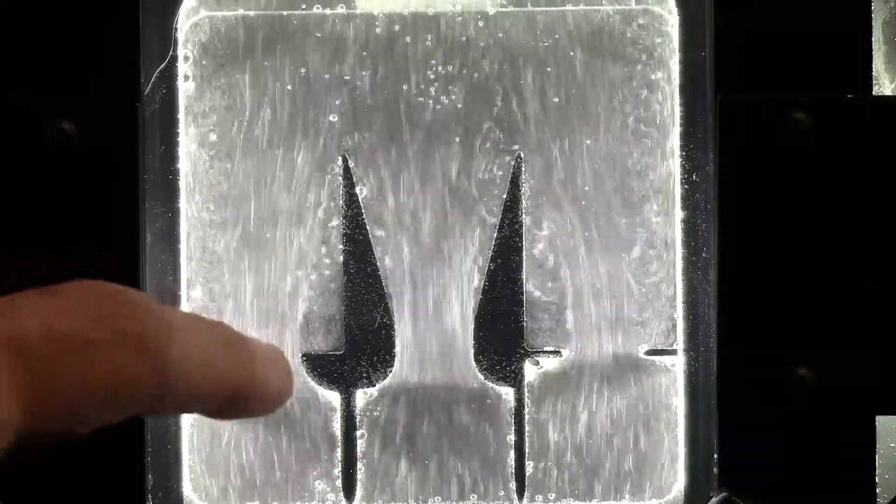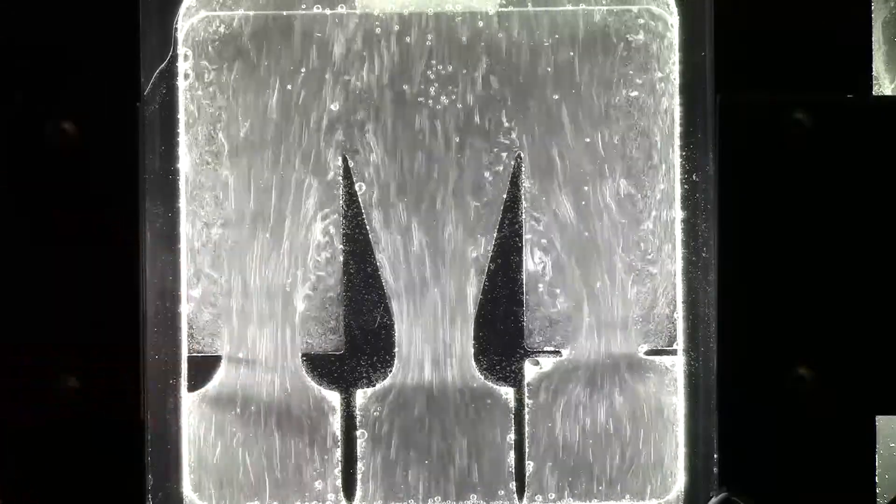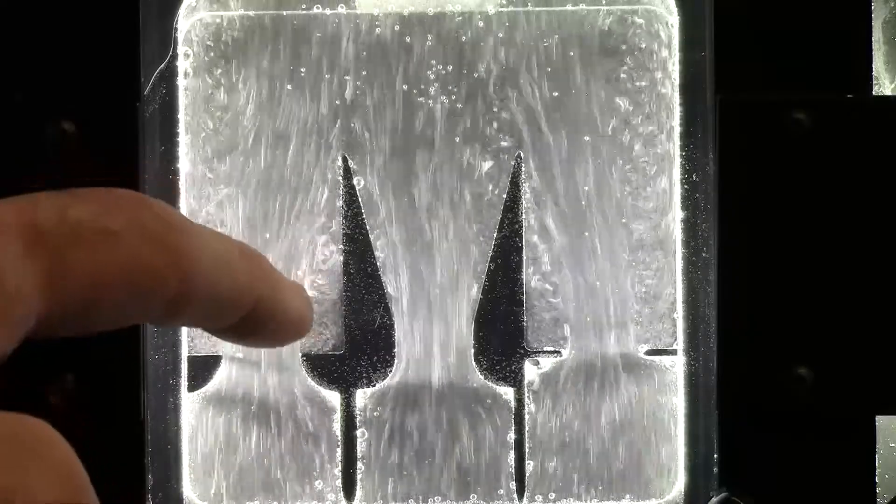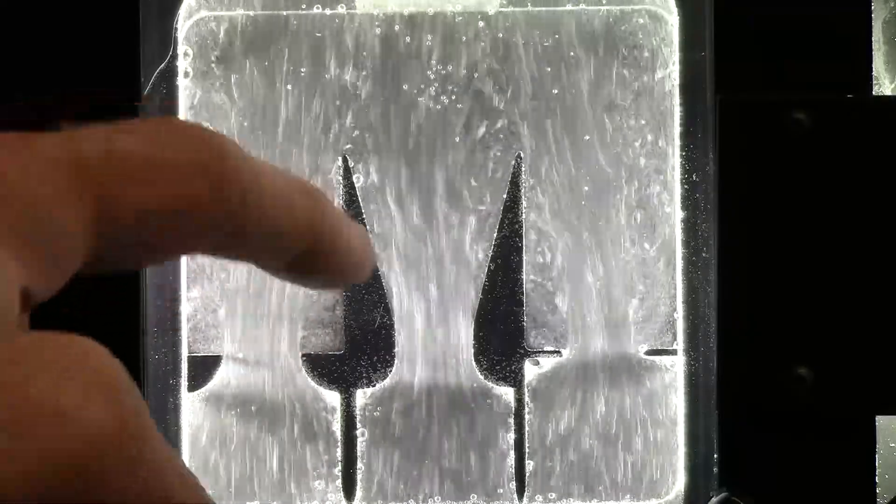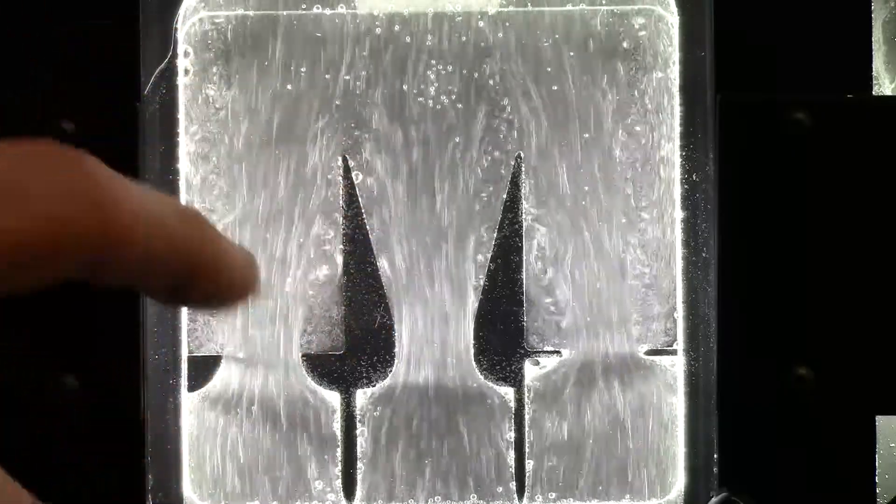Right here at the edge you have separation. The flow separates from the wall and behind this separation we have a region of circulating flow. The particles are moving in a circular fashion.